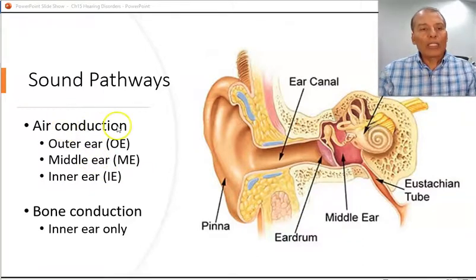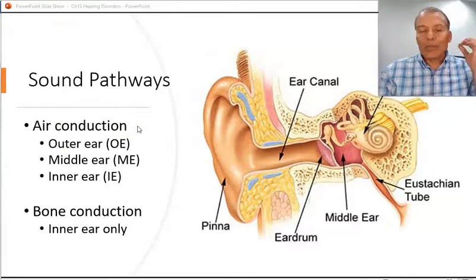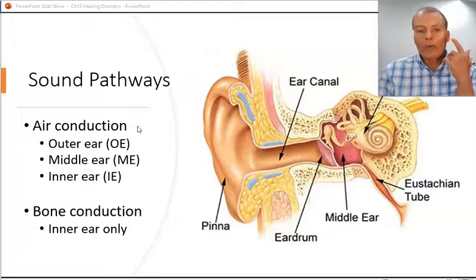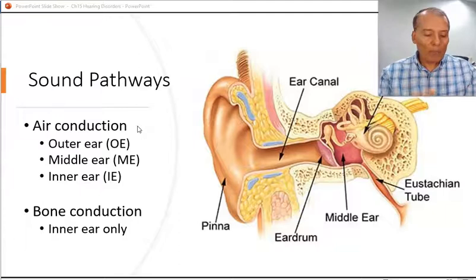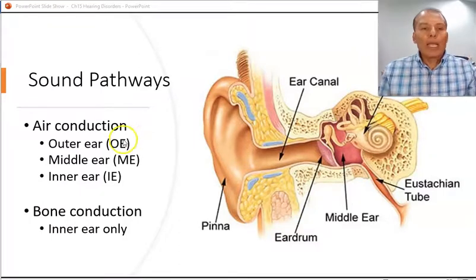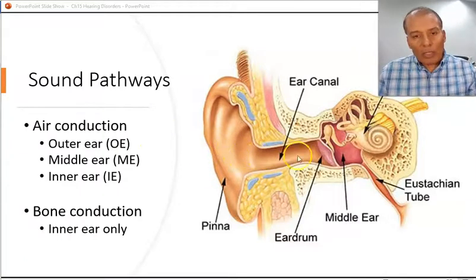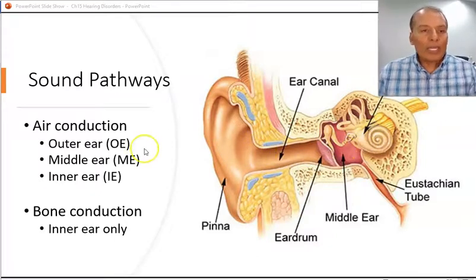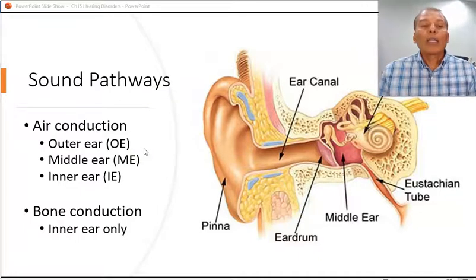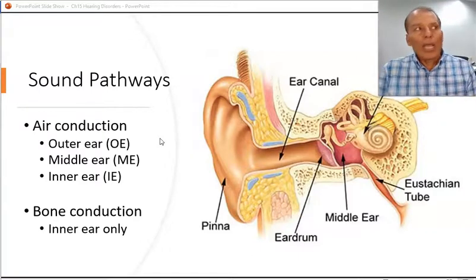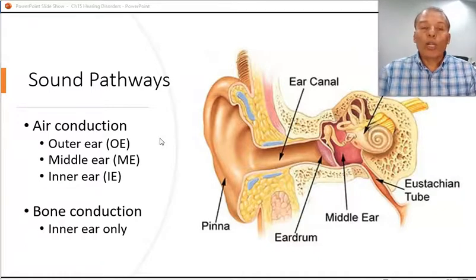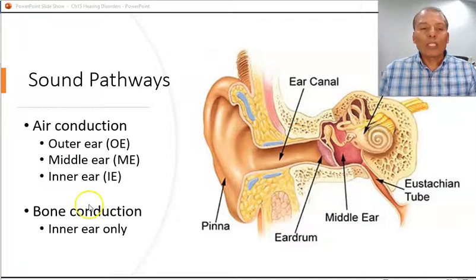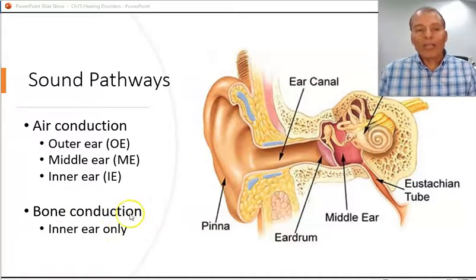Air conduction testing involves the transmission of a tone into the ear through headphones. It evaluates the functioning of the outer ear, middle ear, and inner ear. Air conduction testing tells us if there is a hearing loss or not. When we know there is a hearing loss, we need bone conduction testing to determine where exactly the hearing loss is located — whether in the outer ear, middle ear, or inner ear.